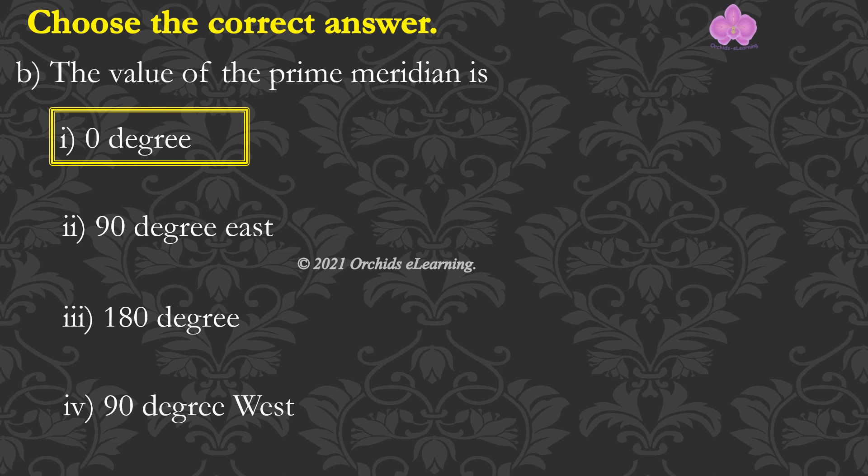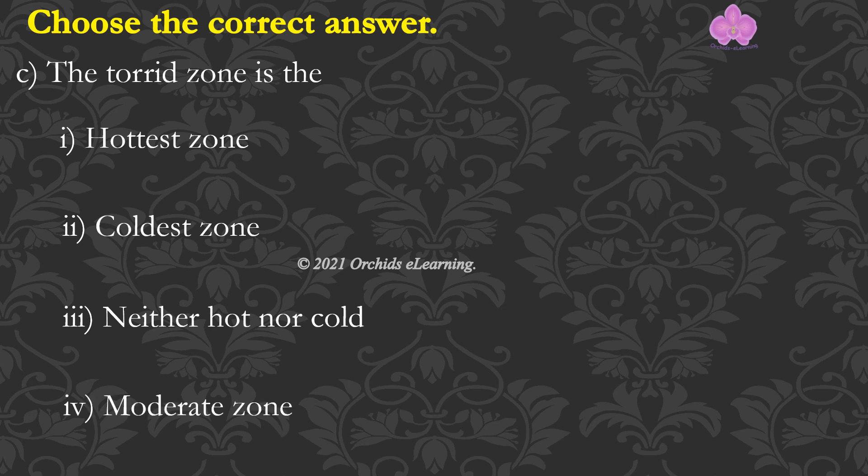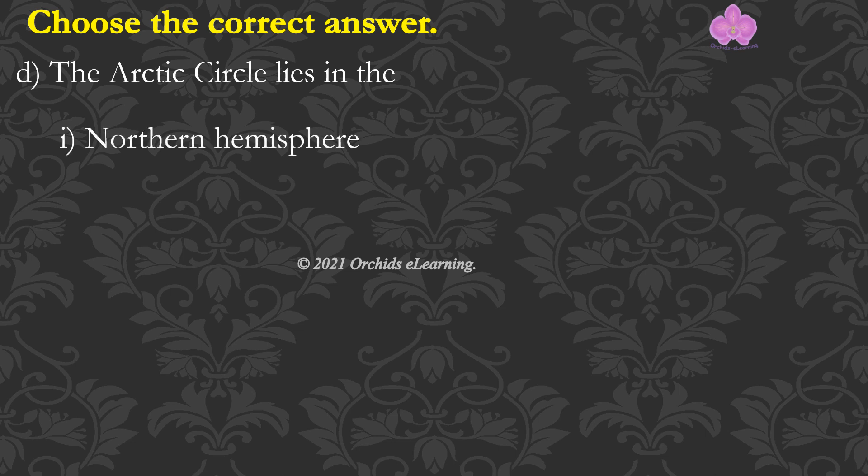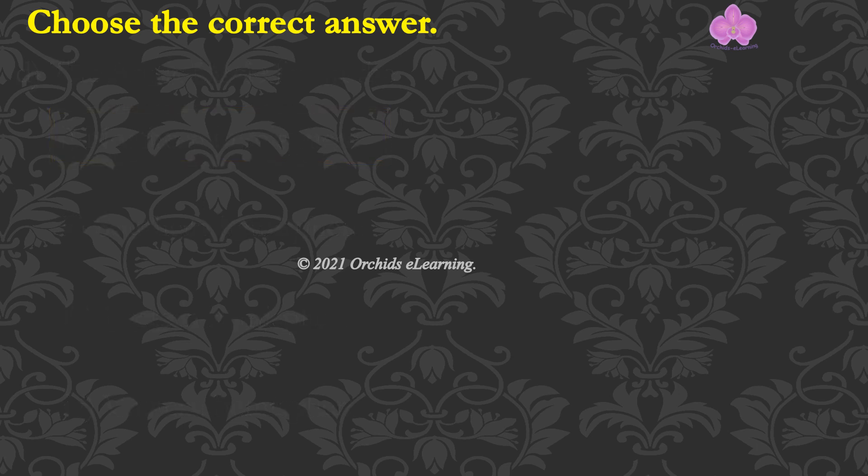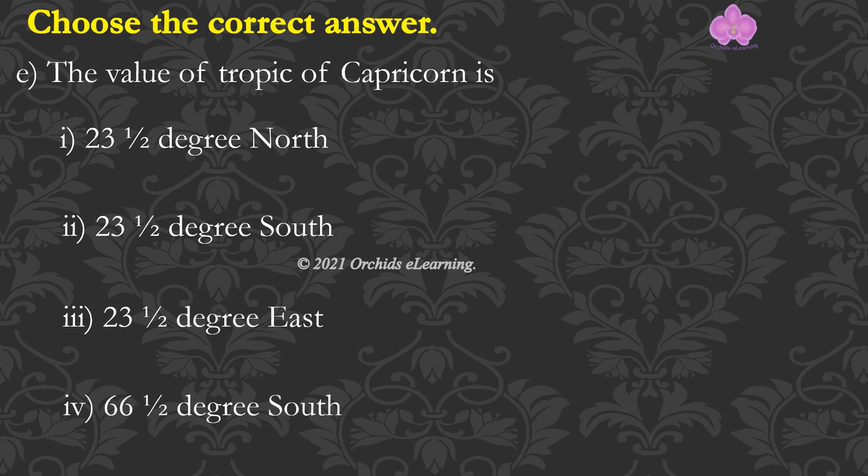The torrid zone is the hottest zone. The Arctic Circle lies in the Northern Hemisphere. The value of Tropic of Capricorn is 23.5 degrees south.